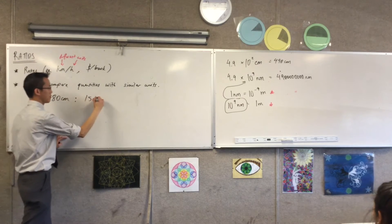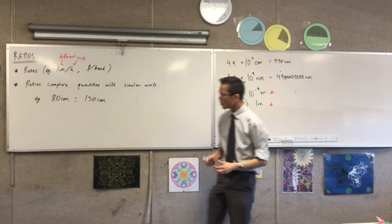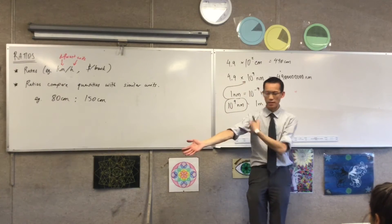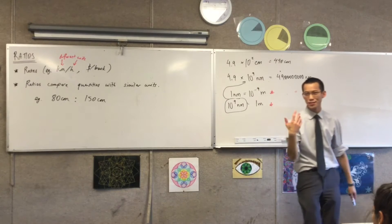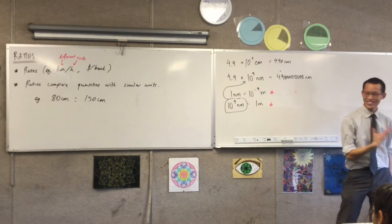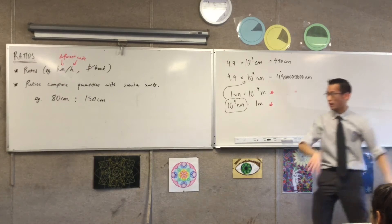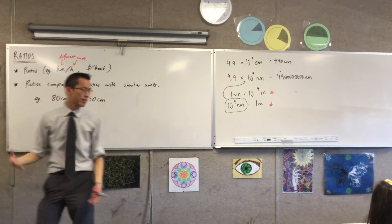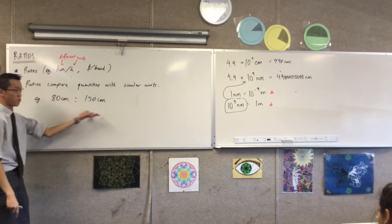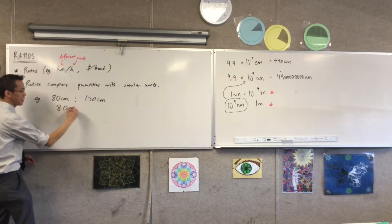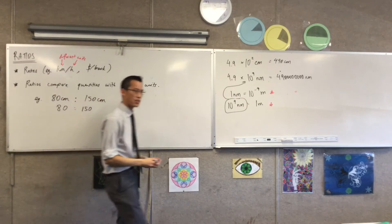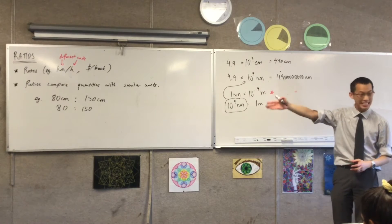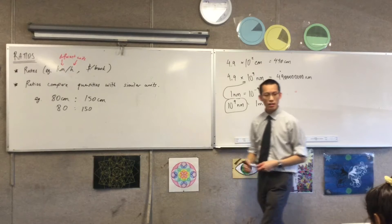For instance, I could compare 80 centimetres with, say, 150. This might be the ratio of the height of someone's body versus the length of their arm or something like that. These are still two separate quantities, but when you look at them, they're actually the same kinds of units — they're both about length. Because you're comparing two things that are really in the same neighbourhood, I actually don't need to write the units. Ratios don't have units at all. So I would read this as 80 to 150.